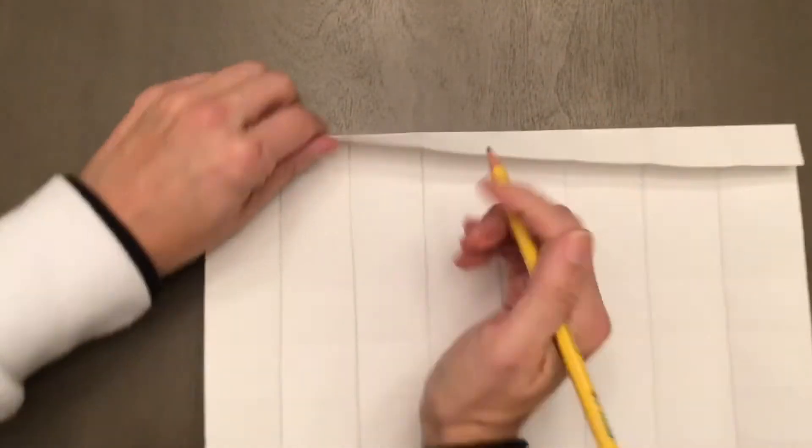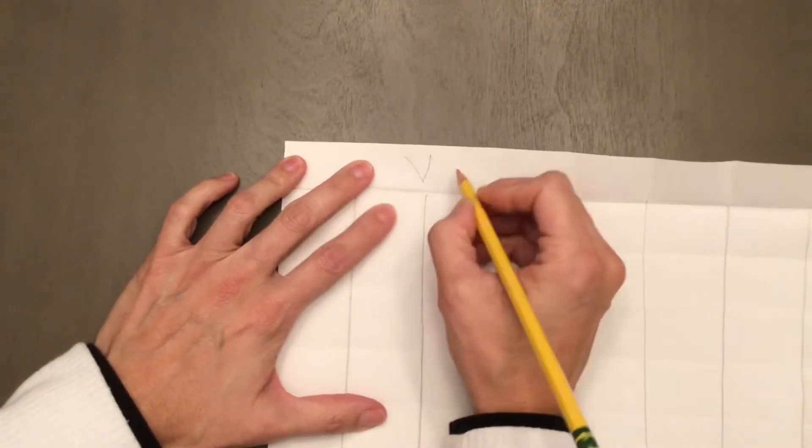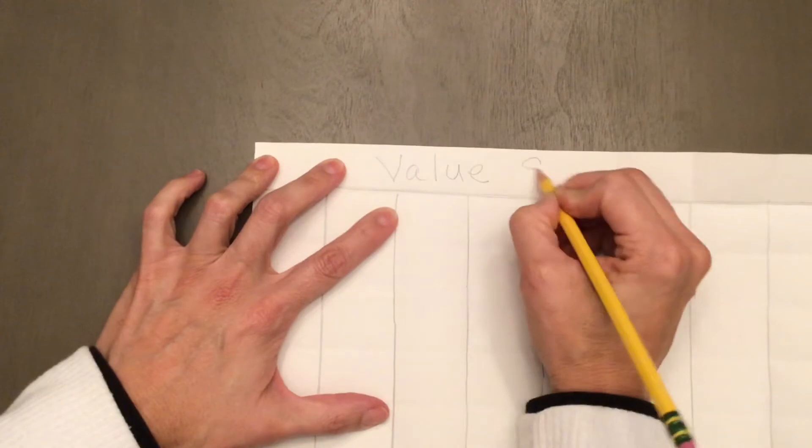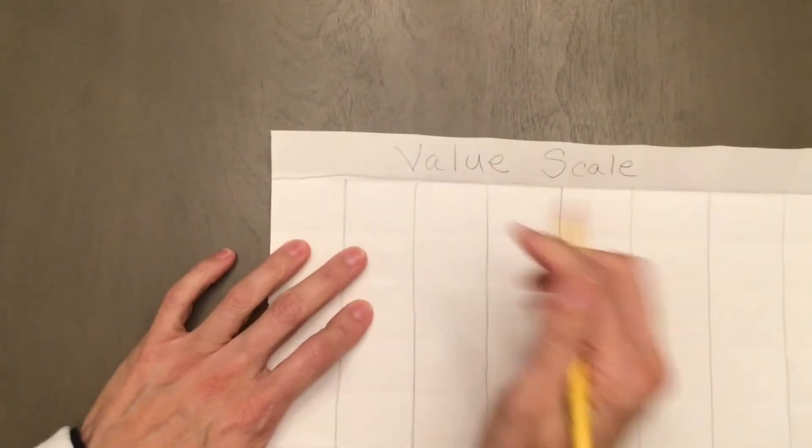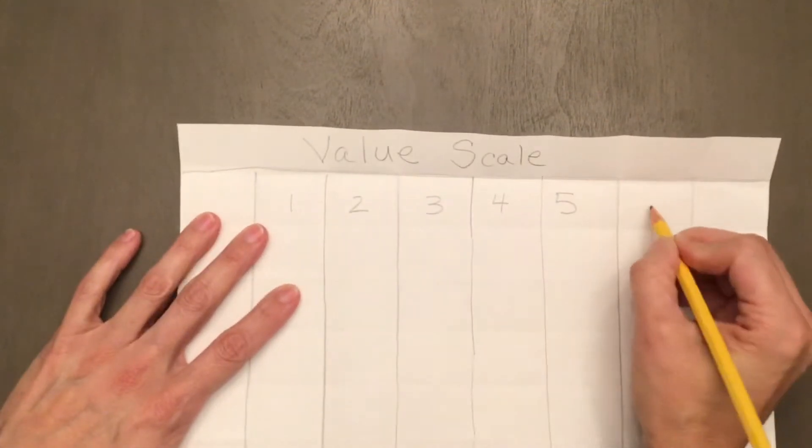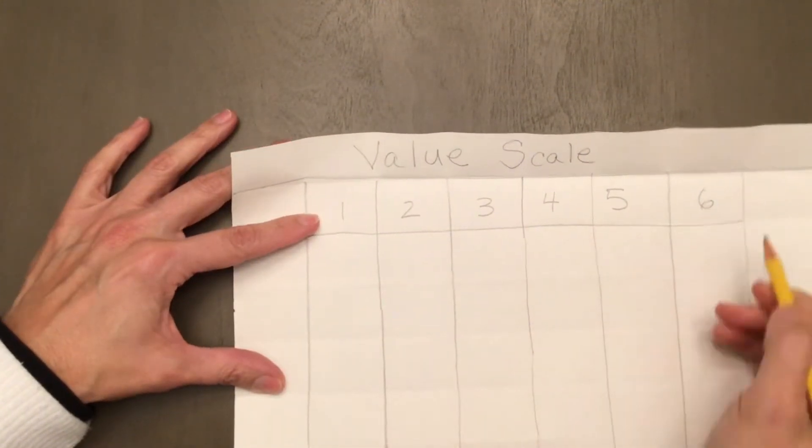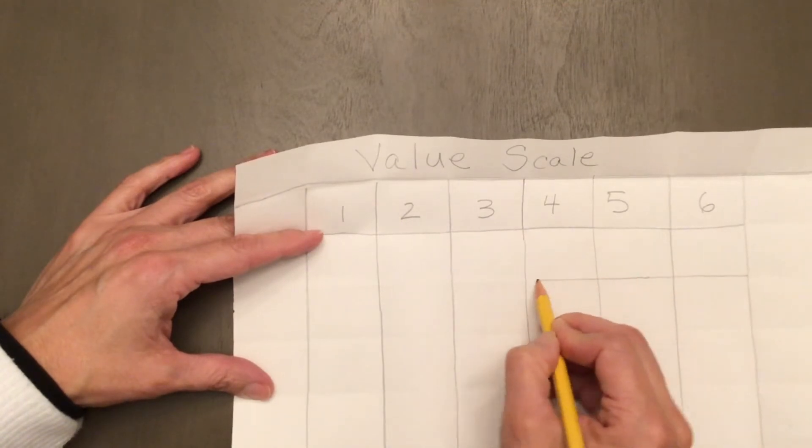Now trace this line horizontally. You're going to write the title right here: value scale. Now we're going to number the squares one through six. Now continue tracing these lines horizontally so you have three spaces.